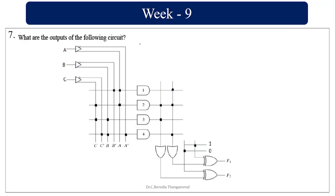Here again a PLA circuit is given — programmable AND and programmable OR. The product terms are: AB̄, AC, BC, and ĀBC̄. Here the OR gate adds these terms, but a special circuit called exclusive OR is also included.